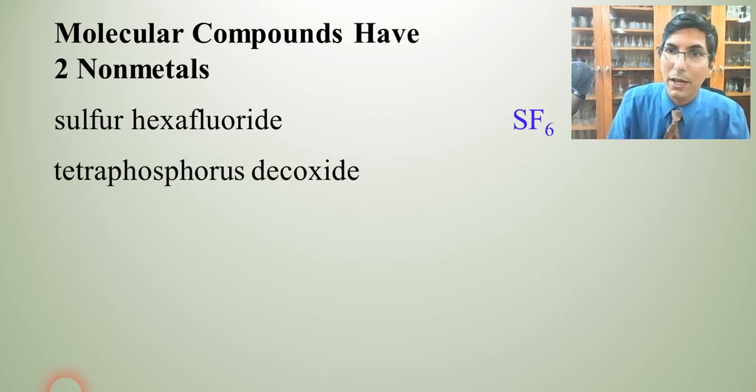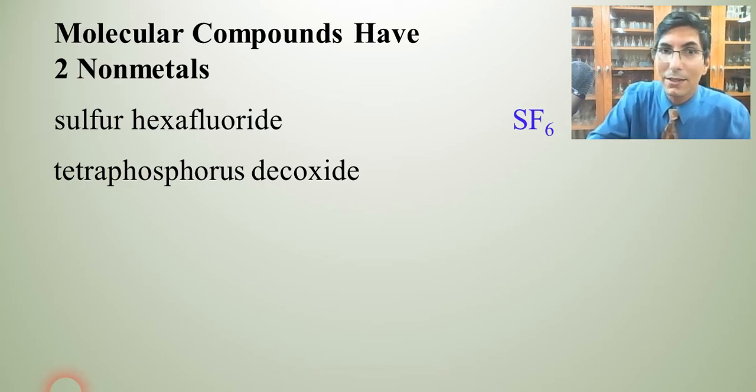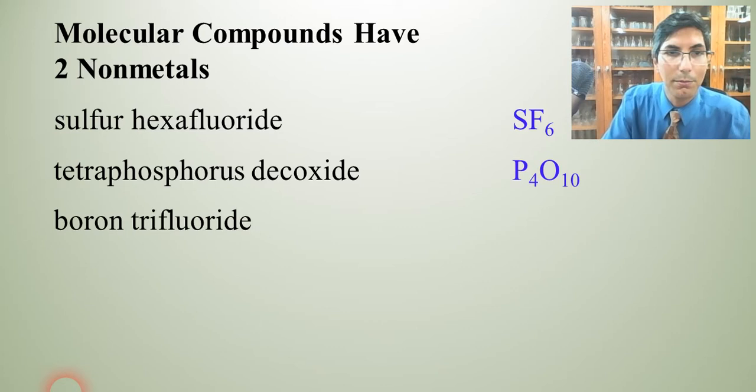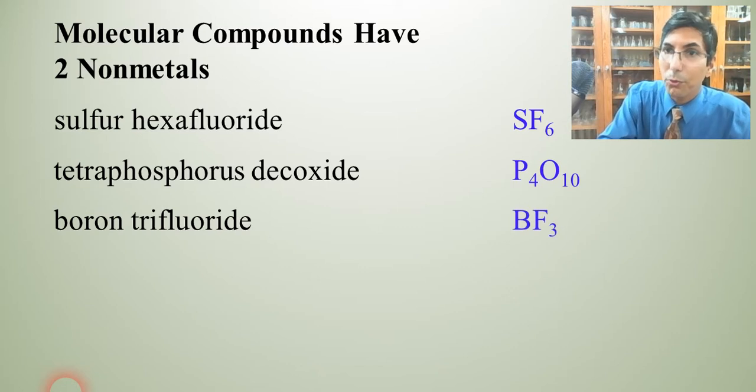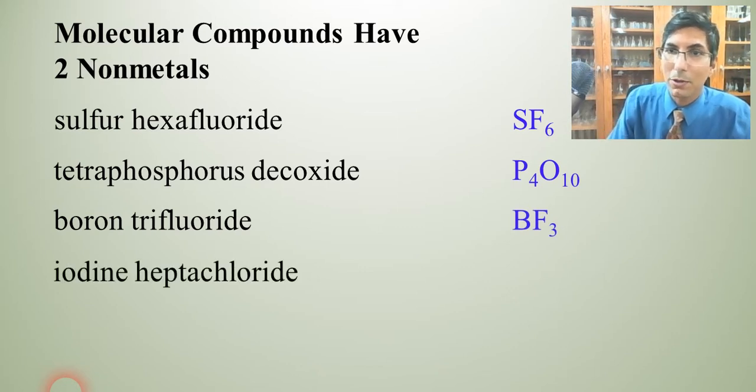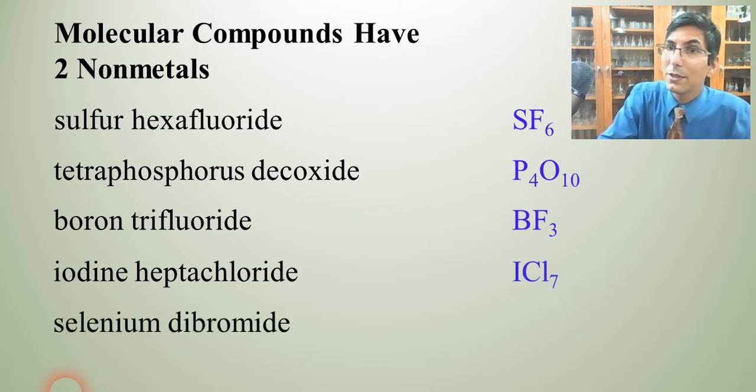And then we can say the same thing for tetraphosphorus decoxide. Tetra means four, so tetraphosphorus is P4. And deca means 10, so decoxide would be O10, so P4O10. Boron trifluoride, tri means three, so trifluoride would be BF3. Hepta means seven, so iodine heptochloride is just ICl7. And selenium dibromide, di means two, so this would be SeBr2.